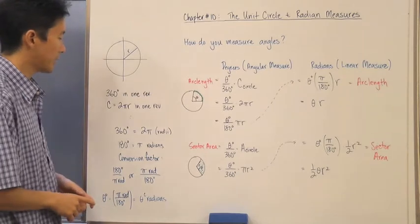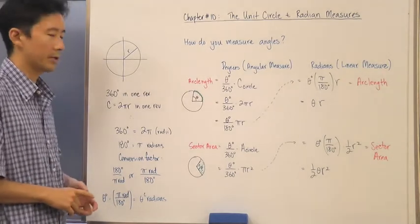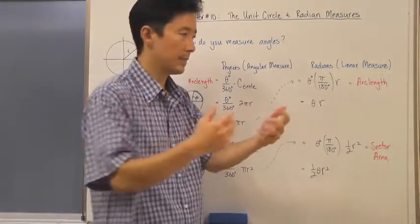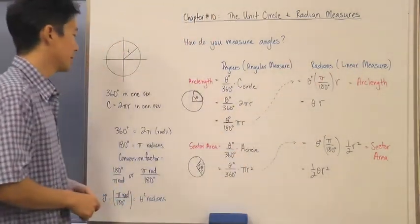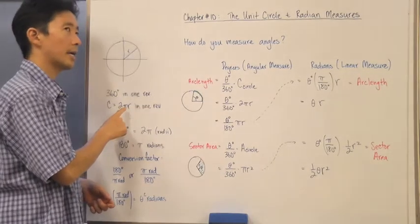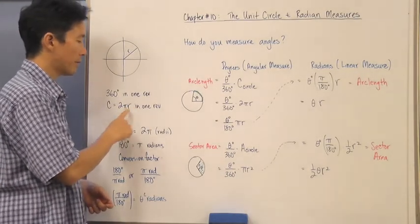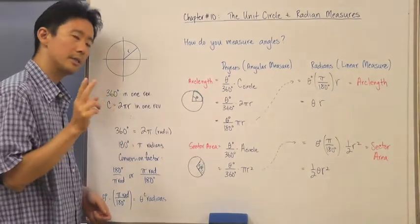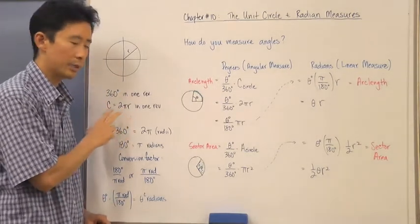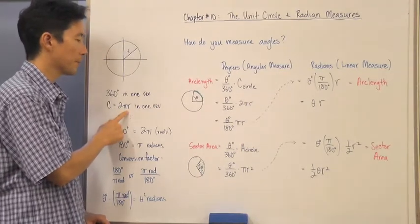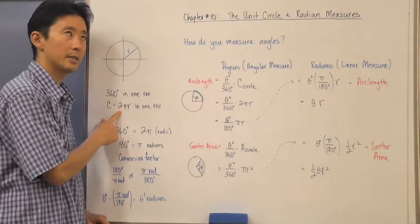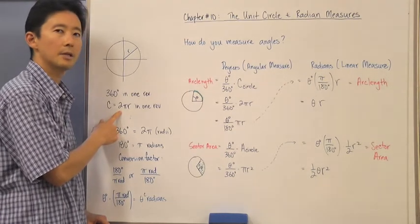Now, in the same respect, if we take a look at the circumference — and remember, circumference is how long it is, it's a linear measure — the circumference is two pi times the radius in one revolution. We need a different interpretation of what this is, because everybody knows this formula but do we really know exactly what it's referring to?